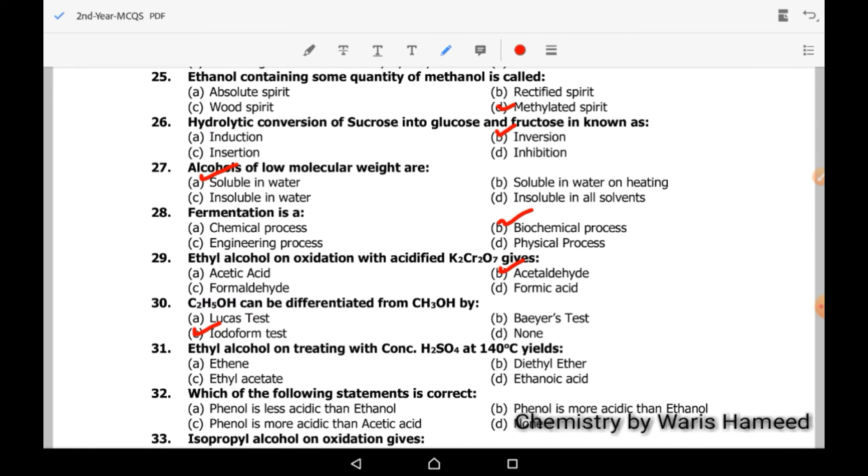Ethyl alcohol on treating with concentrated sulfuric acid at 140 degrees Celsius yields diethyl ether. At high temperature 180 degrees Celsius, it will form ethene. And at lower temperature, it will form diethyl ether.